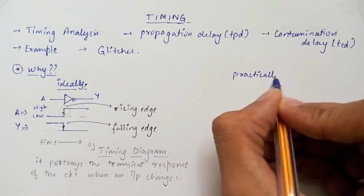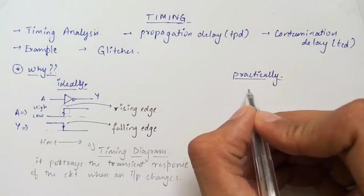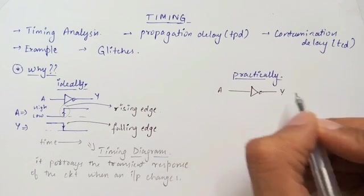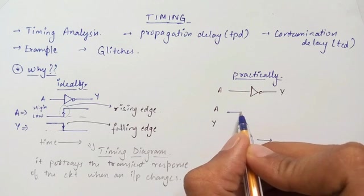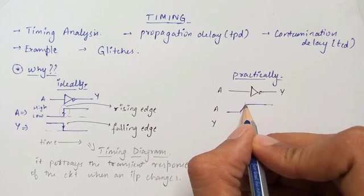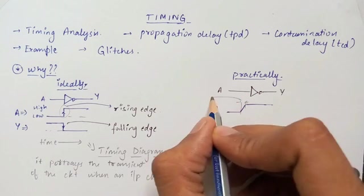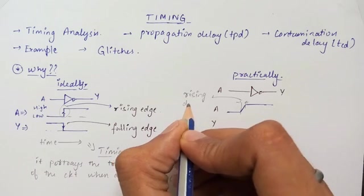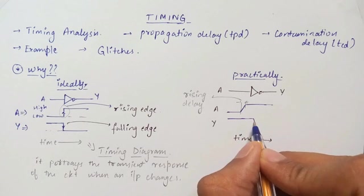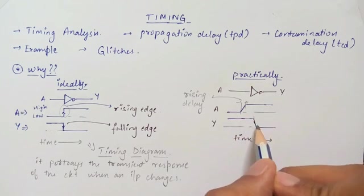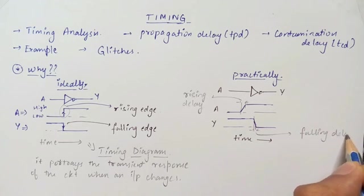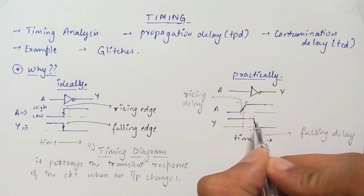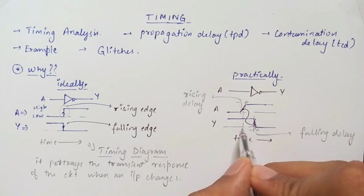Let's look at the practical scenario. Here we consider the same circuit, but this time the inverter is non-ideal and has some delay. Let's draw the timing diagram for A and Y plotted with respect to time. Let's say A changes from low to high, but this time the change is not instantaneous. This delay from one edge to the other is called rising delay or rise time. For a transition in A, the output Y switches from high to low, and the time it takes to reach from high to low is called falling delay or fall time. The time from 50% transition in input to 50% transition in output is called delay.